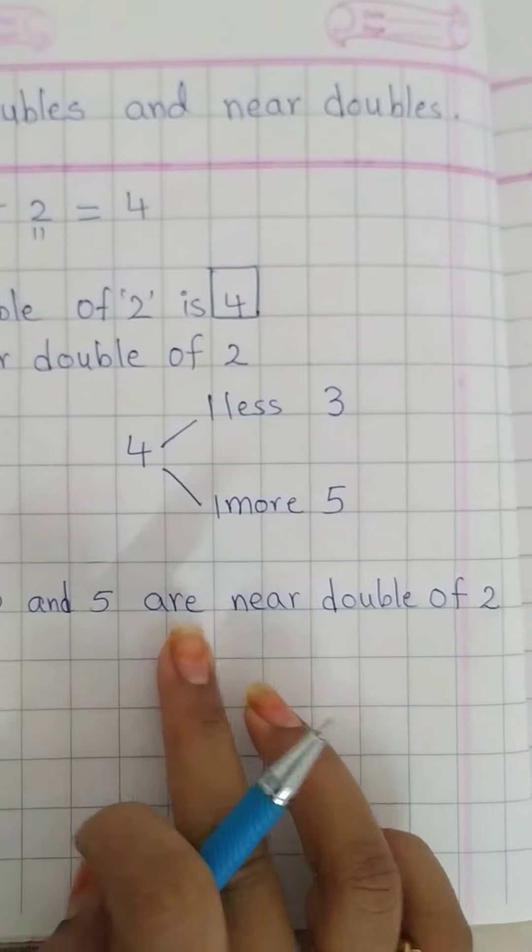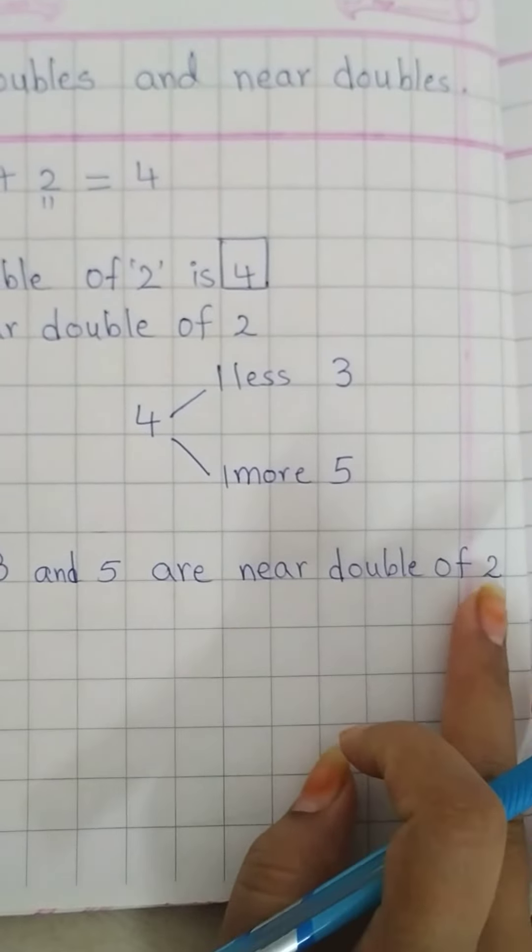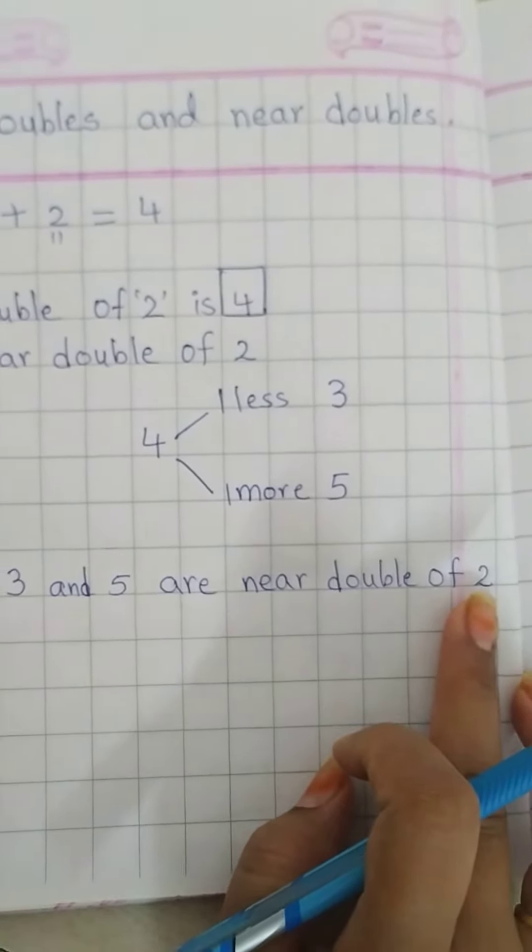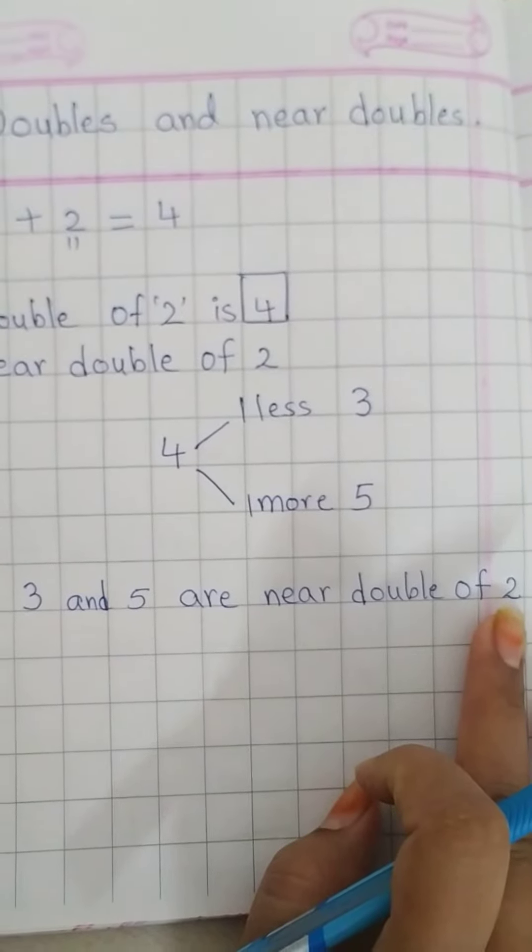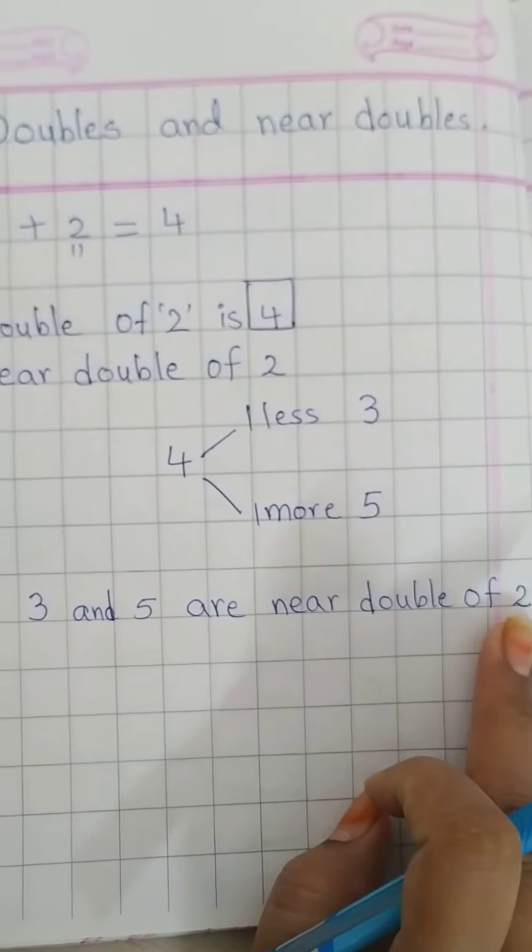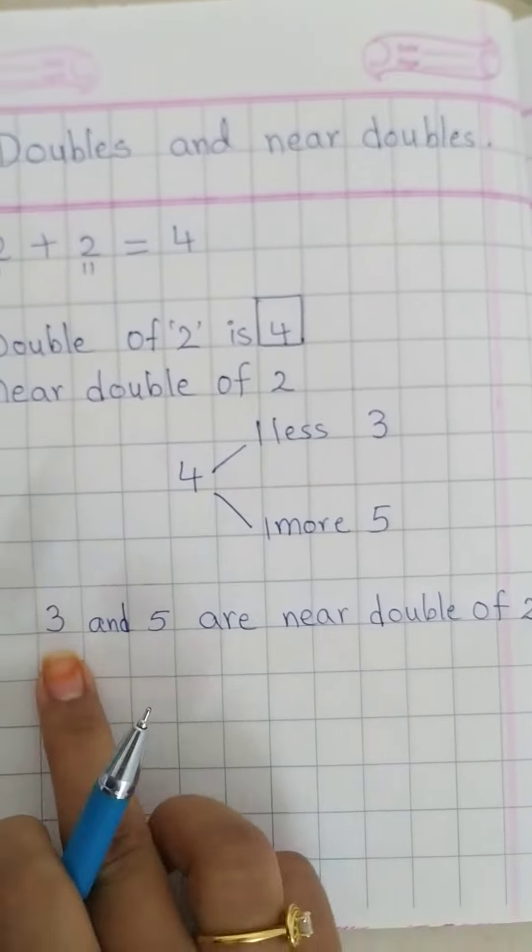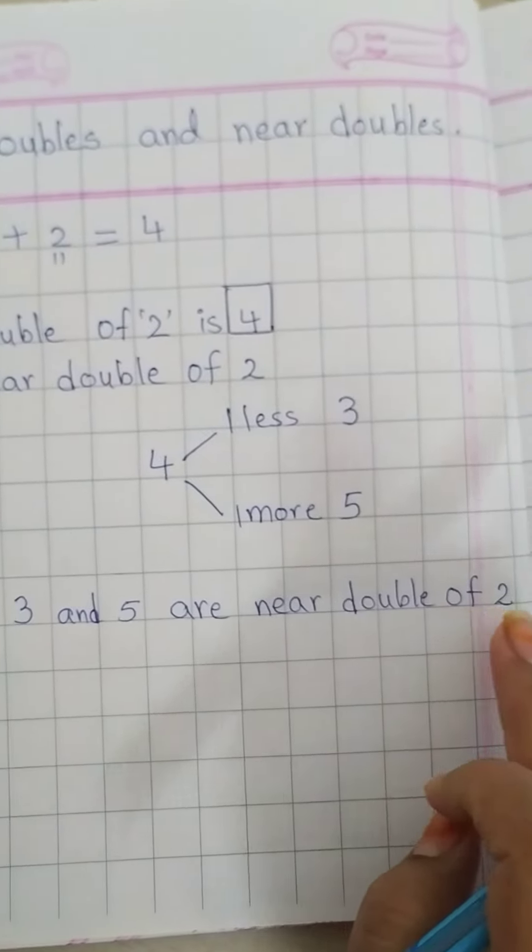3 and 5 are near double of 2. We can say 3 and 5 are near to 4. 3 and 5 are near double of 4.